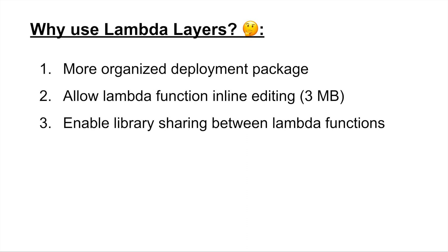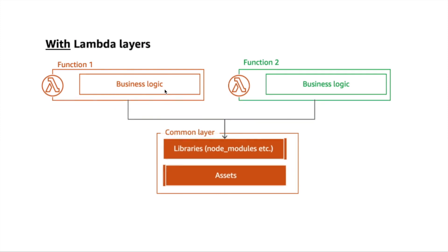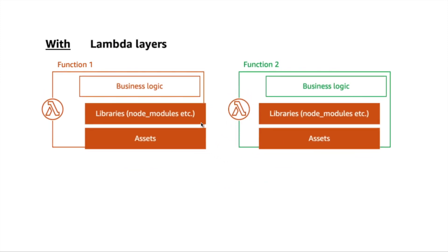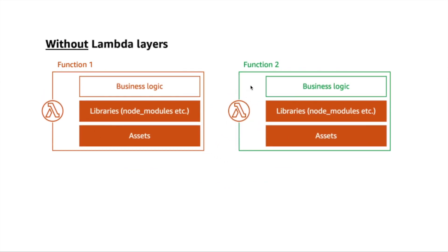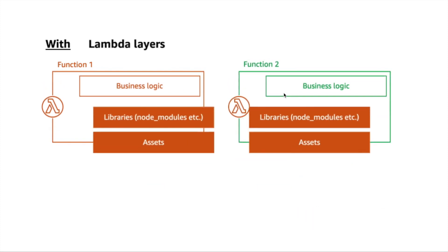Finally, reason number three is that Lambda Layers enable library sharing between different Lambda functions. If you don't use Lambda Layers, you have to zip up all your libraries in each individual Lambda and upload them, even though there may be common libraries between the two functions. You cannot share them. But if you use Lambda Layers, you can extract the libraries out into one layer and it can be shared by multiple Lambda functions, which is a lot more convenient.